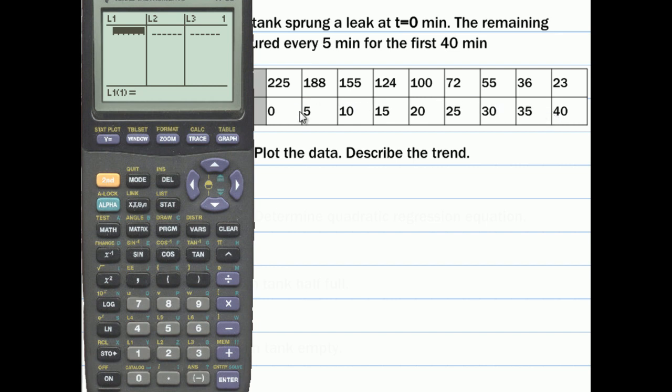We have to put one of these rows into L1 and the other one into L2. Generally, the time would be the independent variable, and by default, your calculator puts the independent variable in L1. So we're going to put the time into L1. It's important that these two values match up for each row. If there was one extra number here or here, we should probably go back and check that we entered our data correctly. But this seems good so far.